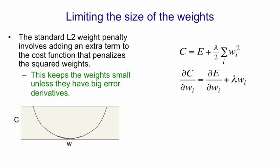If you look at the equation, the cost that you're optimizing is the normal error that you're trying to reduce plus a term which is the sum of the squares of the weights with a coefficient in front, lambda, and we divide by two so that when we differentiate the twos cancel.